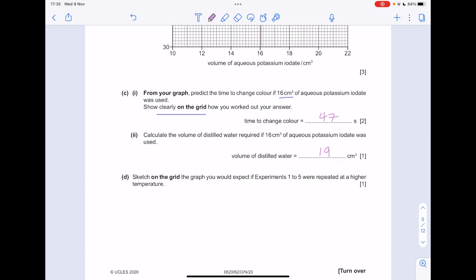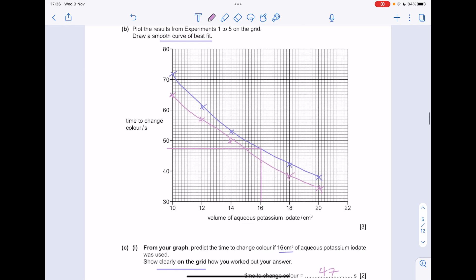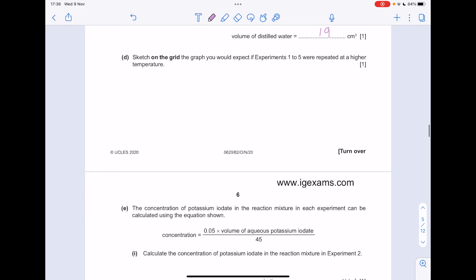Sketch on the grid the graph you'd expect to have experiments 1 to 5 were repeated at a higher temperature. So you'd expect the time to change colour to be faster in every single case. So I'll just draw it as a mock-up. It's terribly drawn, but I'm just trying to show here that it would take less time at high temperature due to that increased kinetic energy.